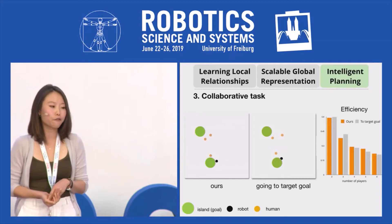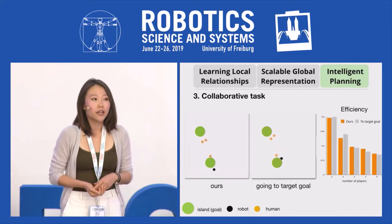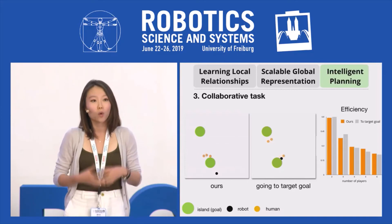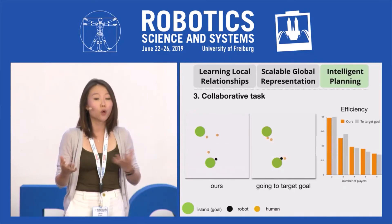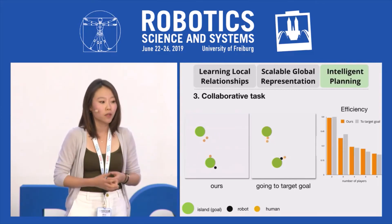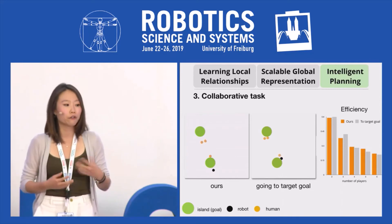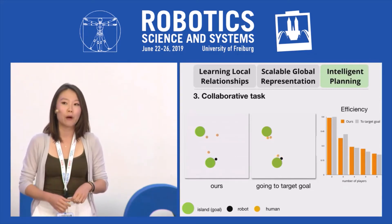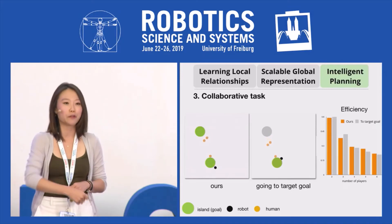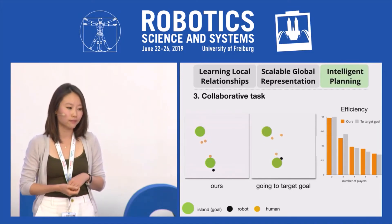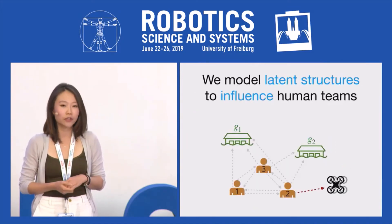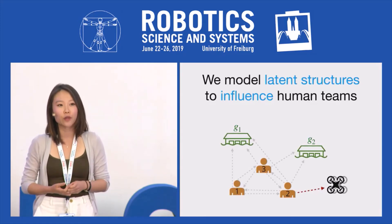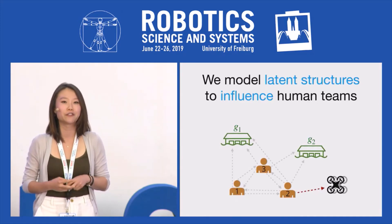Finally, we tested our framework in a collaborative setting, where the robot wants to lead the team towards the more optimal bottom goal, where the humans don't know which goal is more optimal. We show that our robot using our framework is just as effective as a strong baseline where our robot makes it super obvious which goal should be the target. In conclusion, we provide a scalable way to model teams so that robots can positively influence human teams.